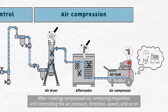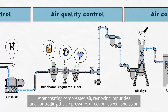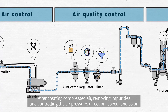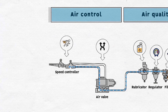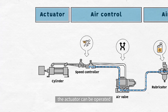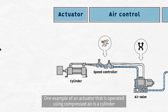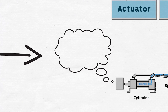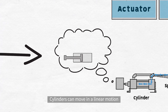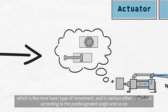After creating compressed air, removing impurities, and controlling the air pressure, direction, speed, and so on, the actuator can be operated. One example of an actuator that is operated using compressed air is a cylinder. Cylinders can move in a linear motion, which is the most basic type of movement, and in various other directions according to the pre-designated angle and so on.